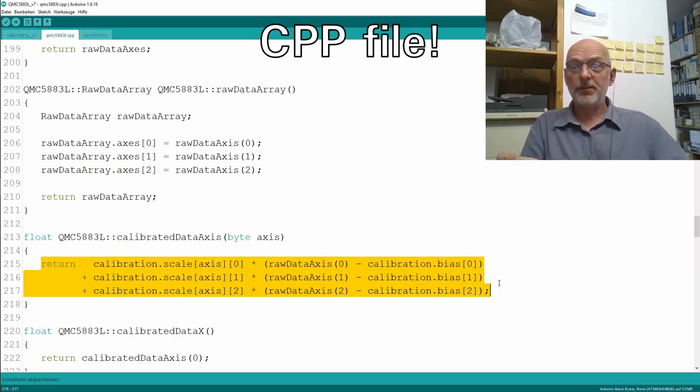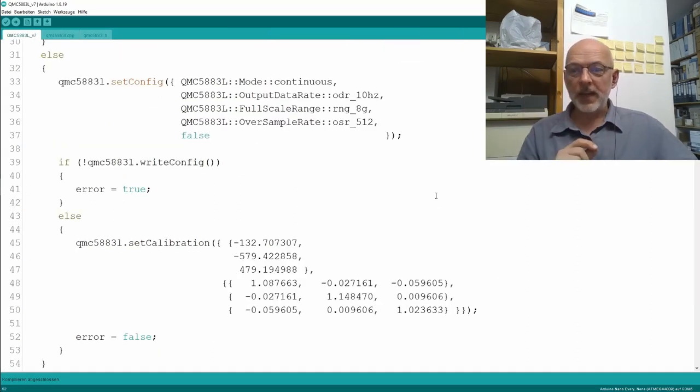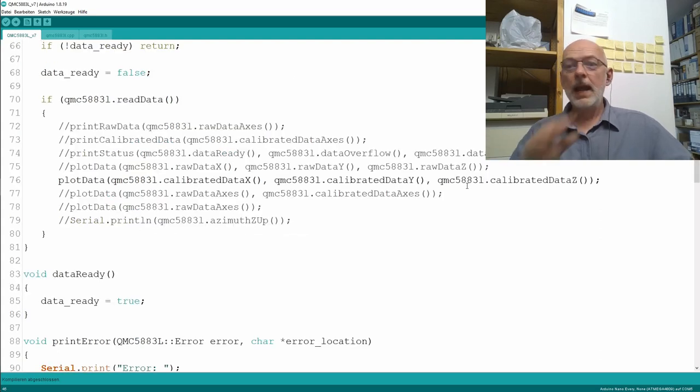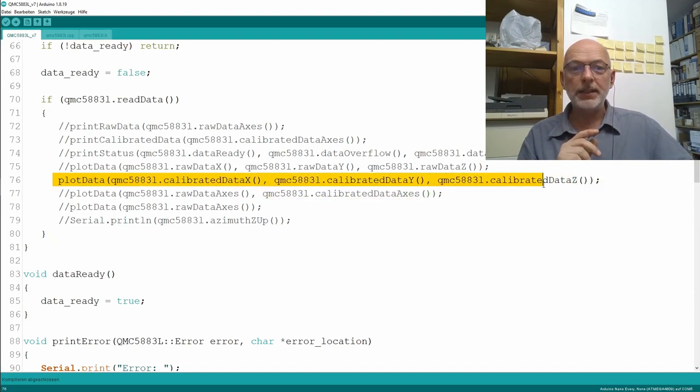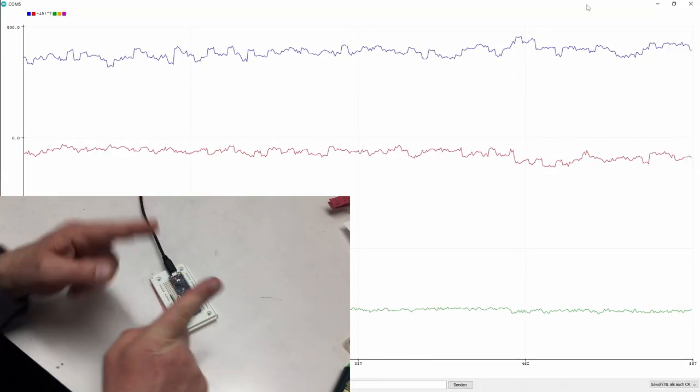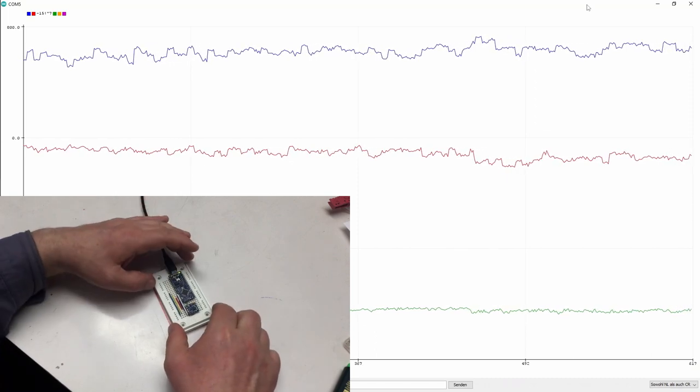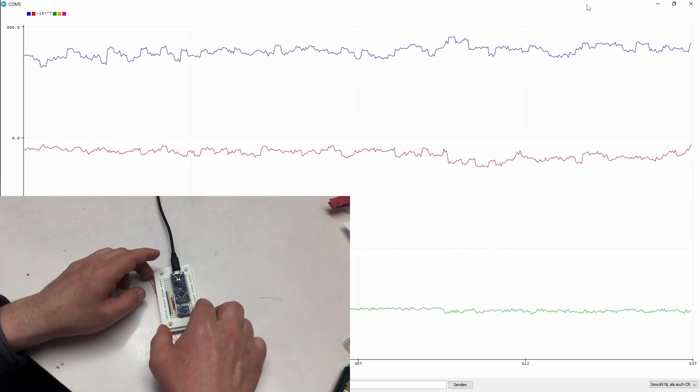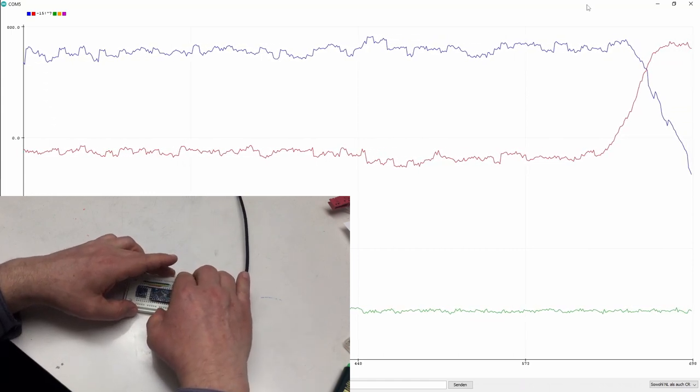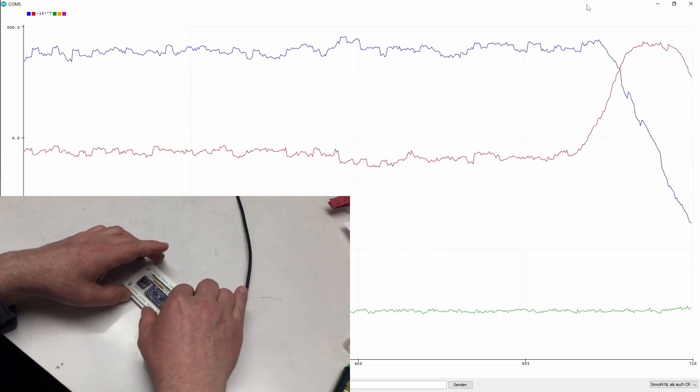That's all in the C++ file. Now, in the sketch itself, I pass our calibration data from Magneto 1.2 to our set calibration method. Then, like in the previous video, I plot the calibrated data in a format for the Arduino Serial Plotter. And the result, I'm showing calibrated data here, let's rotate. And we have our sine signal.